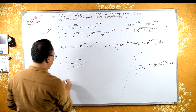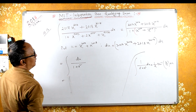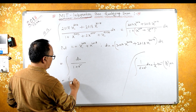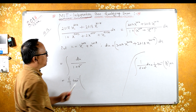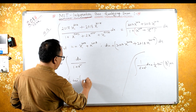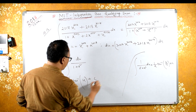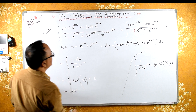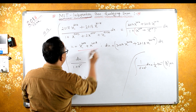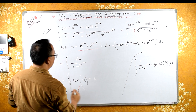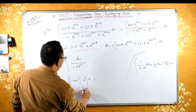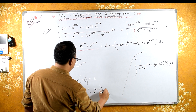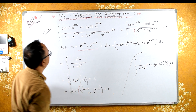So 1 by 1 is 1, giving us arctan of u. Now substituting back what u is: arctan of x raised to 2017 plus x raised to 2018, plus constant of integration C. This is our required answer.